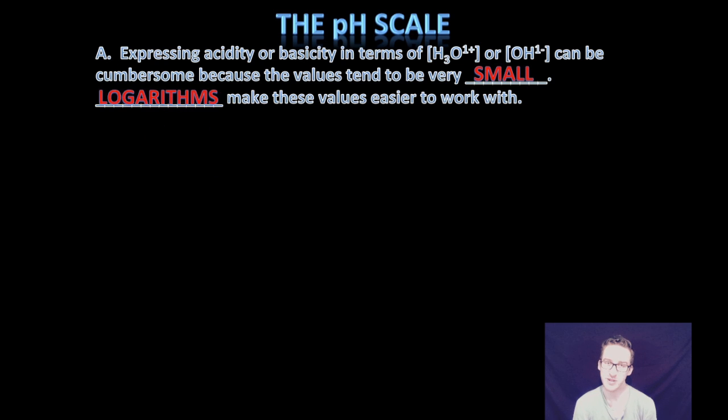So as you think about that last video where we were talking about the concentrations of hydronium ions or hydroxide ions, hopefully you recognize that it could be a little bit cumbersome to say this solution is acidic because it has a concentration of hydronium ions at 1 times 10 to the negative two. Really cumbersome because those numbers are often very small. So to make your life easier, we're going to use logarithms.